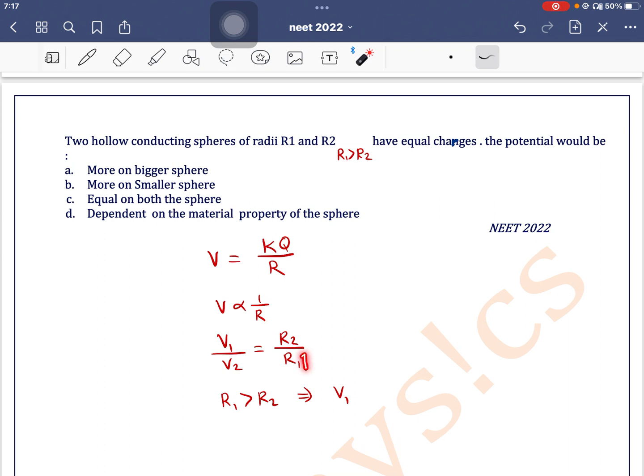So R1 stands for the bigger sphere, R2 stands for the smaller sphere. So the potential of the smaller sphere will be more. The potential would be more on the smaller sphere. Option B is the correct one.